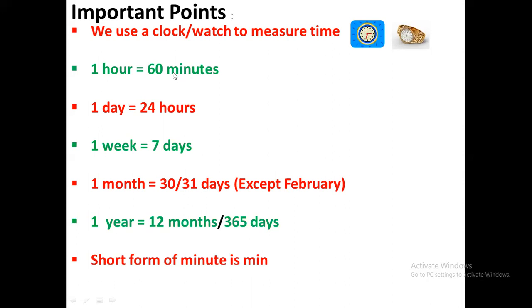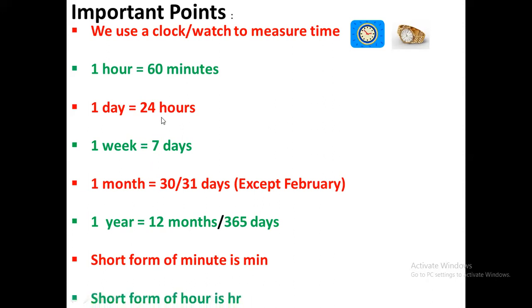If you want to write 'minute' in short form, you will write M-I-N, so the short form of minute is 'min'. The short form of 'hour' — H-O-U-R — if you want to write it in short form, you will write H-R: small h, small r.